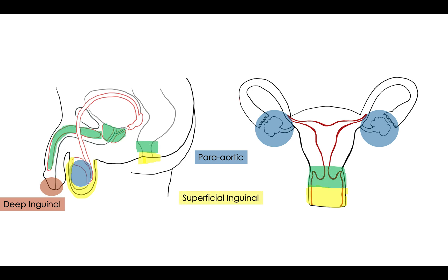In green, we have some more internal parts: the corpus cavernosum, the prostate, the anus above the pectinate line. On the female side, we have the cervix and the proximal vagina — things that are up a little bit further and a little more internal. So this is going to be the internal iliac.